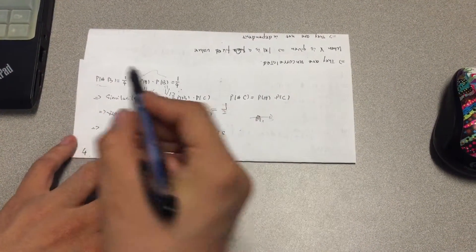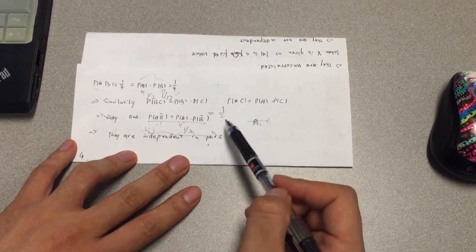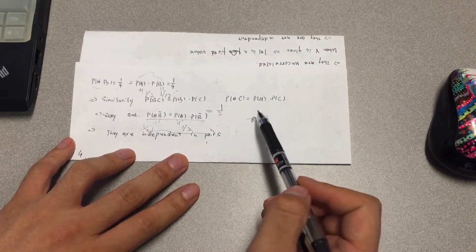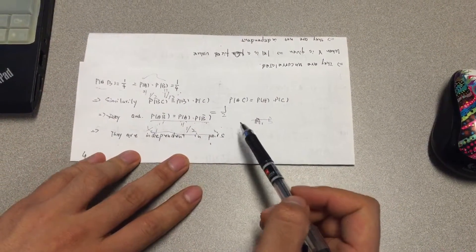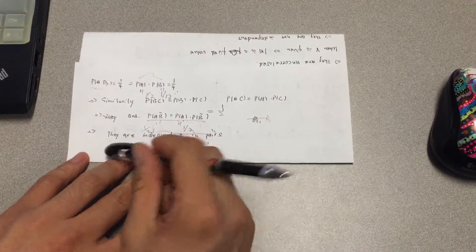By symmetry, P(B) and P(C), and P(A) and P(C) are all independent. So we finally derive that they are independent in pairs. That's the solution of question 3. Bye-bye.